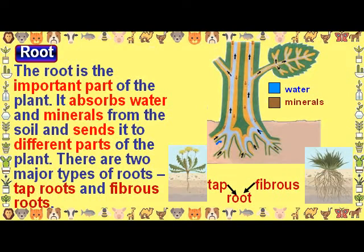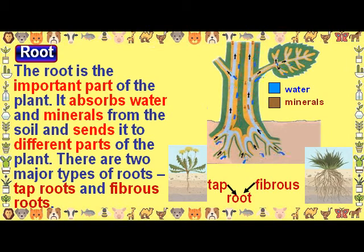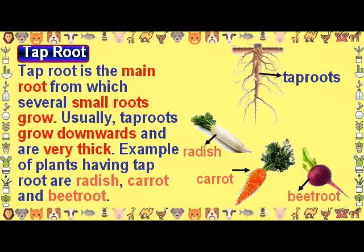Root: The root is an important part of the plant. It absorbs water and minerals from the soil and sends it to different parts of the plant. There are two major types of roots: tap roots and fibrous roots. Tap root is the main root from which several small roots grow. Usually tap roots grow downwards and are very thick. Examples of plants having tap roots are radish, carrot, and beetroot.